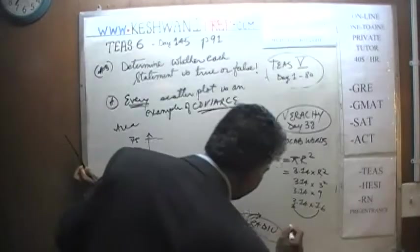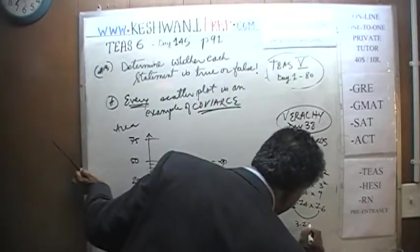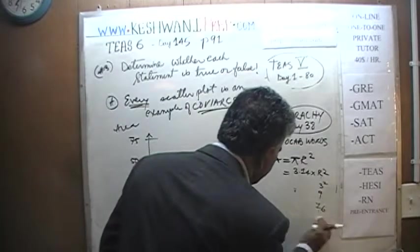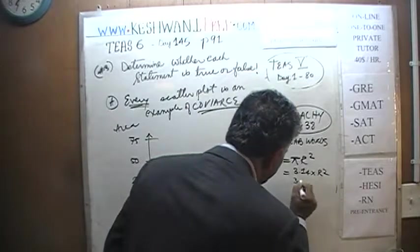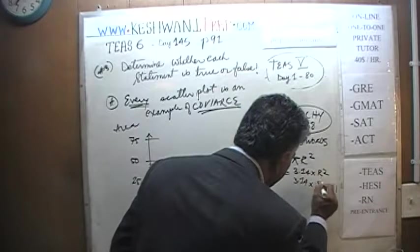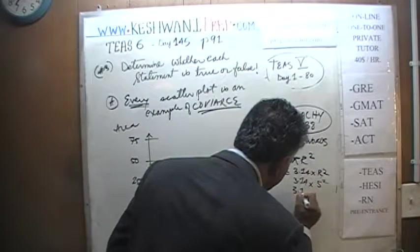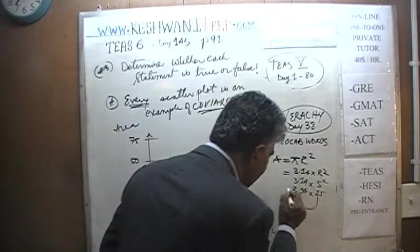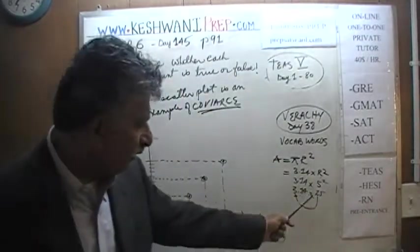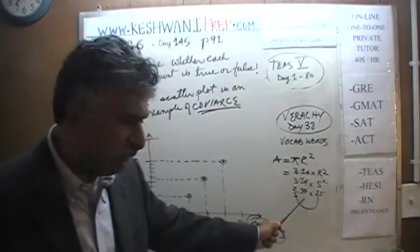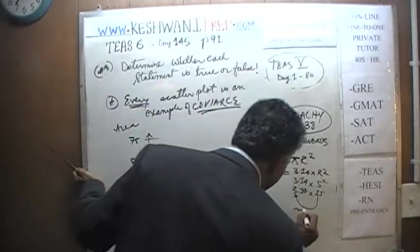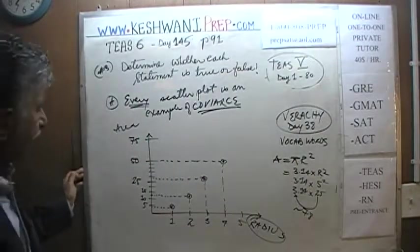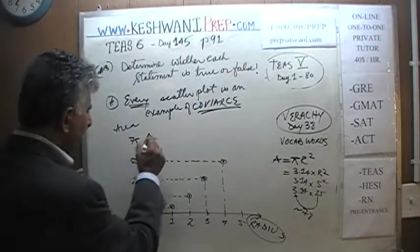Finally, when we plug in a radius of 5, we get 3.14 times 5 squared, which is 3.14 times 25. 25 times 3 is 75, but it's 25 times 3.14, so it's going to be around 78 — just a little bit above 75 on the y-axis.